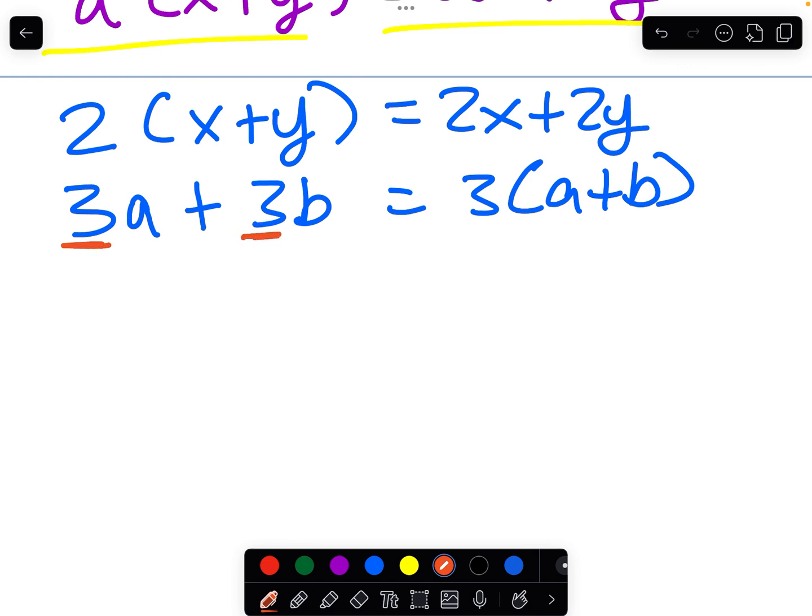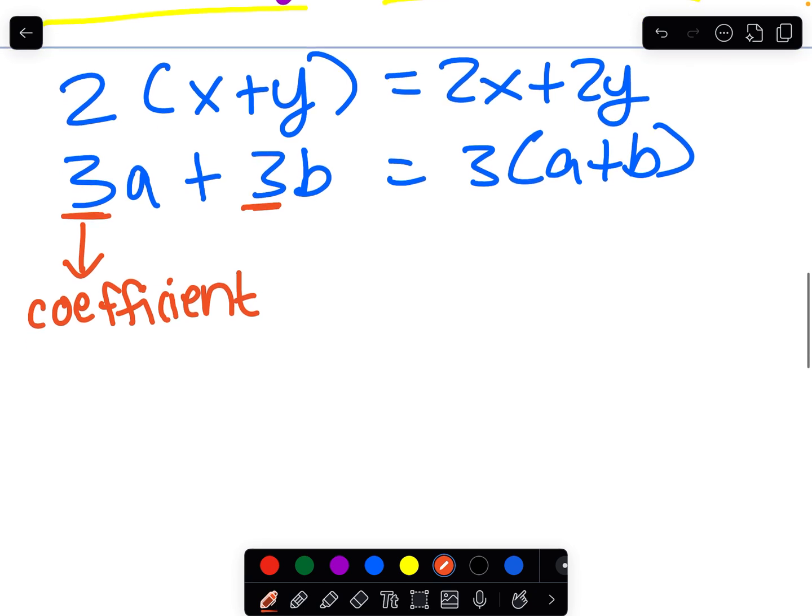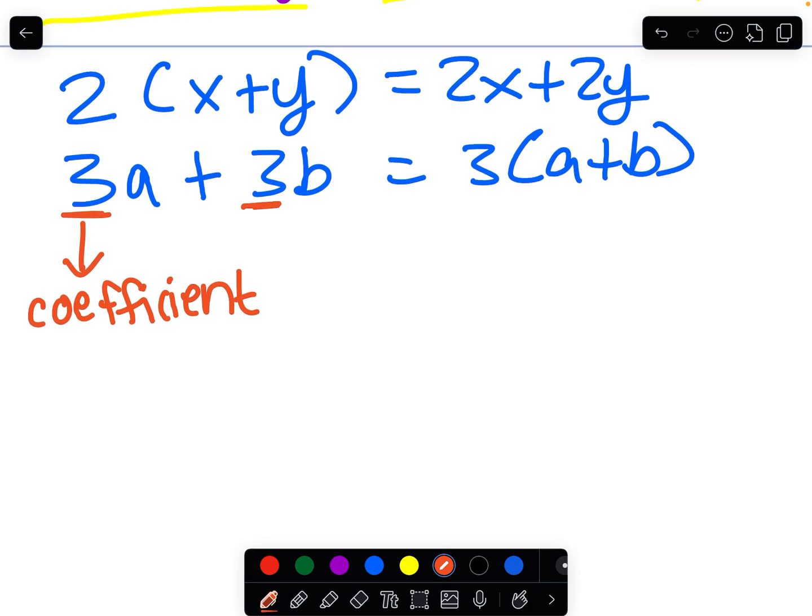One thing to know is that this number that is multiplied by a variable, that's called the coefficient. A number that is multiplied by a variable, with that variable represented by a letter, is called a coefficient. And you'll need to know that word because when the coefficient is the same and you're adding terms.